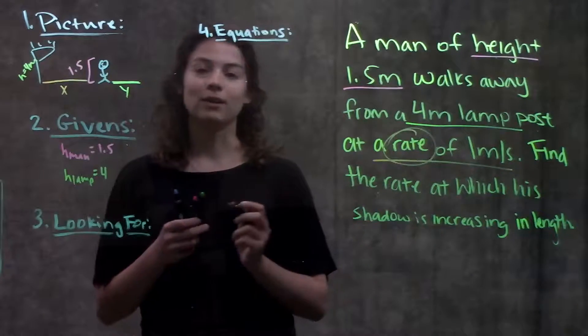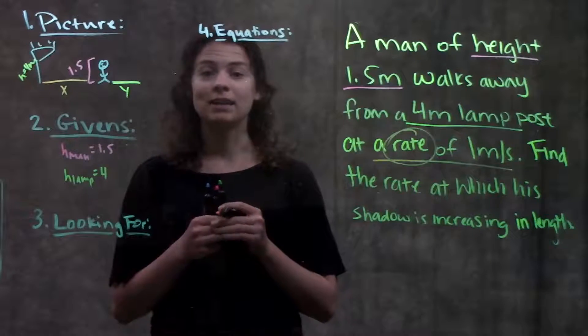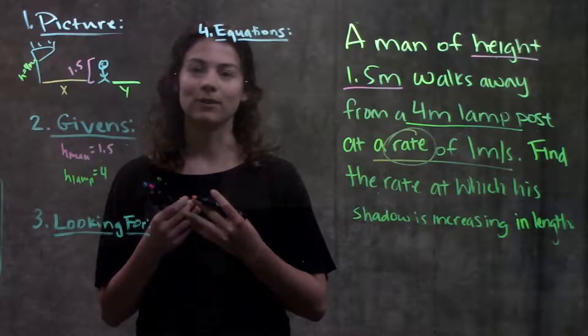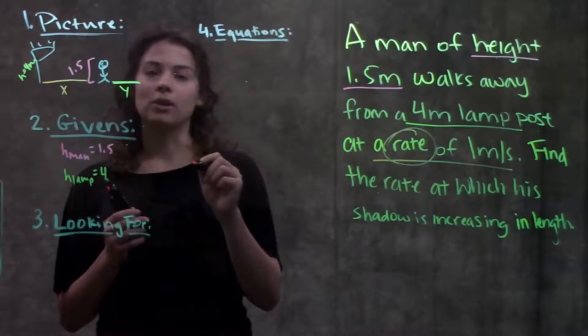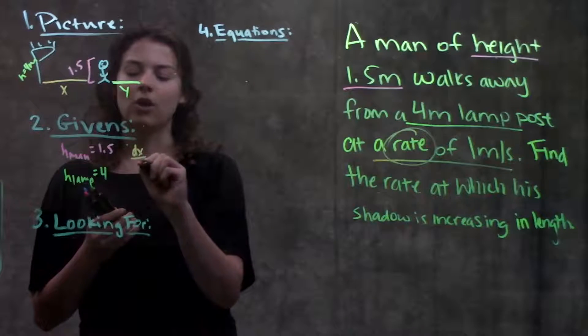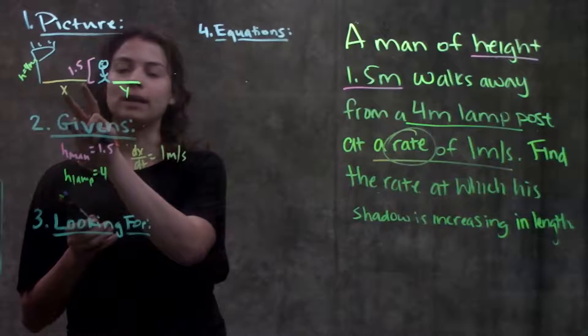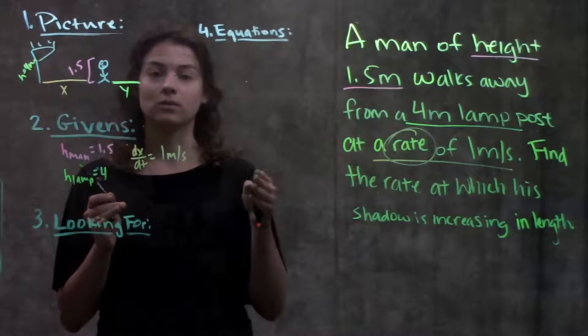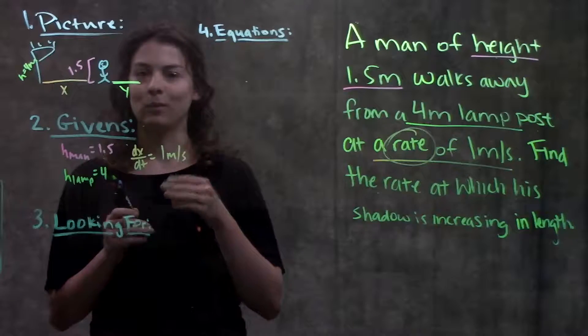Okay whenever you see this word rate you want to think derivative because remember the derivative is just the instantaneous rate of change at a specific point. So the rate that he's walking away is 1 meter per second. I'm going to represent that using math terms as dx over dt is equal to 1 meter per second. Because remember I said x is the value at which he's walked away that distance. So the rate at which x is increasing is 1 meter per second.